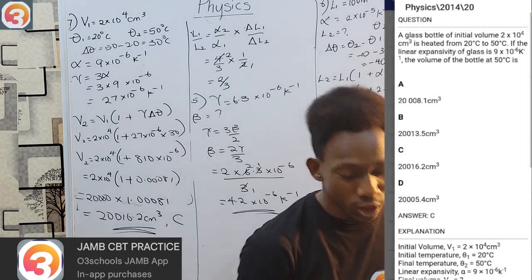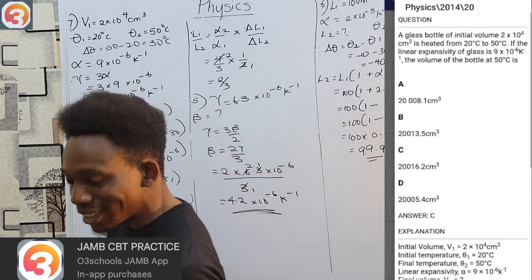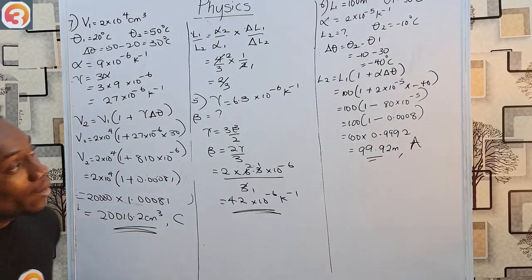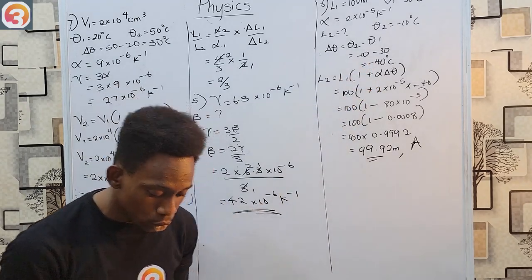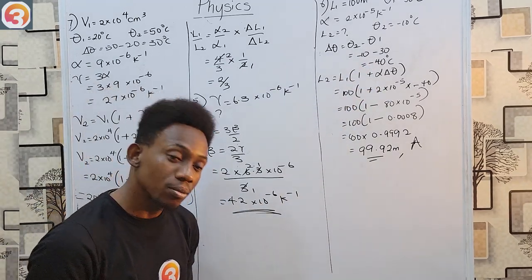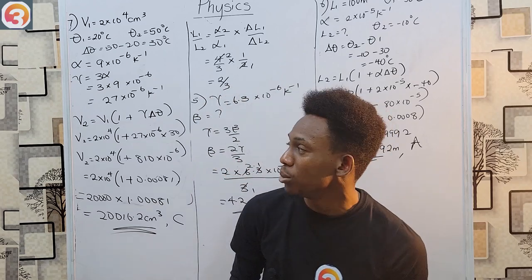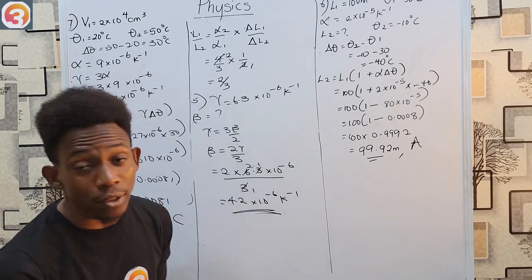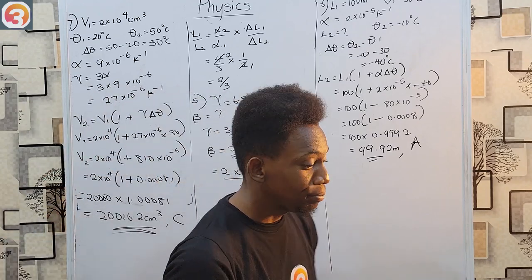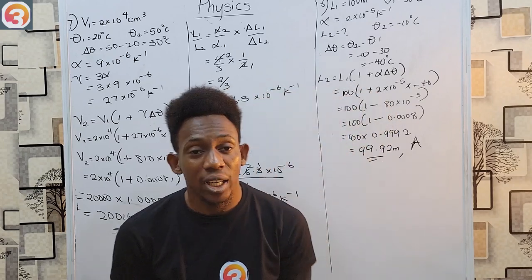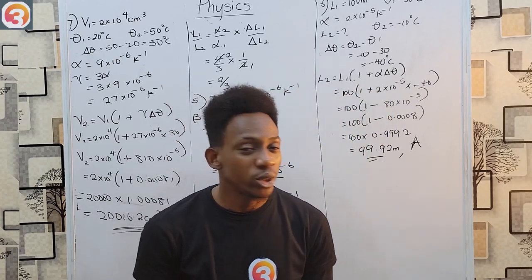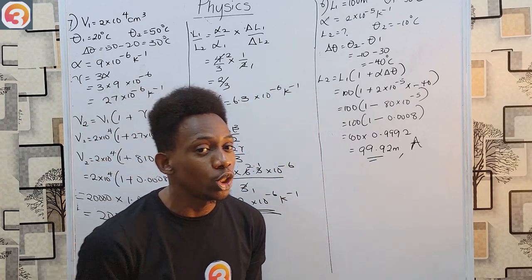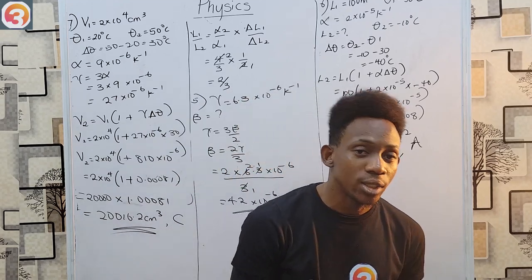These are all simple questions — just remember your formulas. If change in temperature is positive, length/volume/area increases; if negative, it decreases. Thank you very much for watching. Subscribe to this channel, watch other videos on different topics, share with your friends, and get the O3Schools JAM app — it will help you out. My name is Athanasius. Thank you and see you next time.